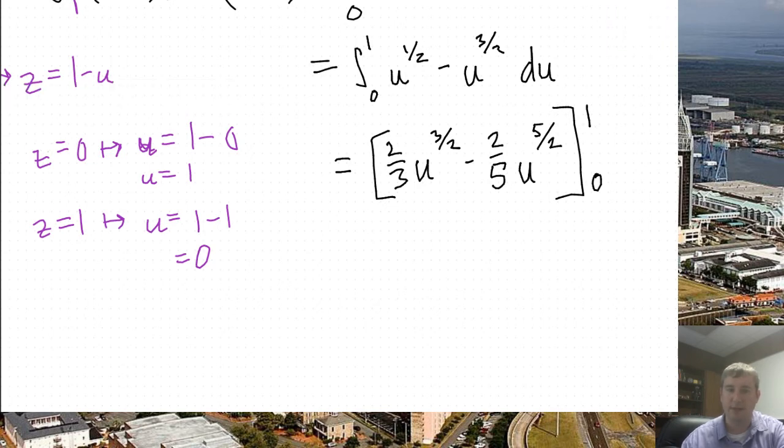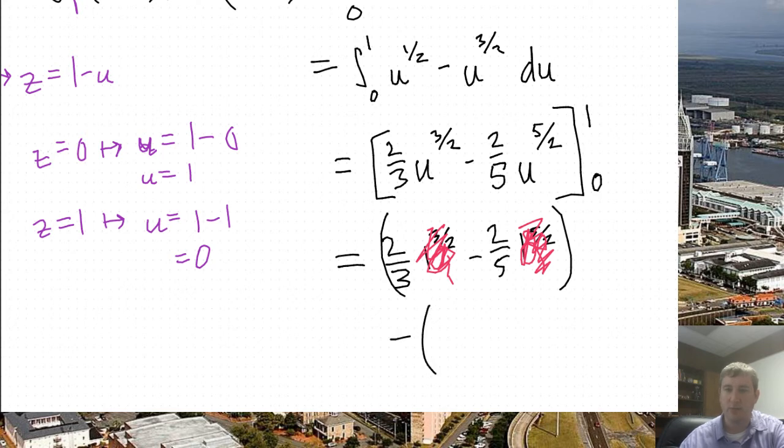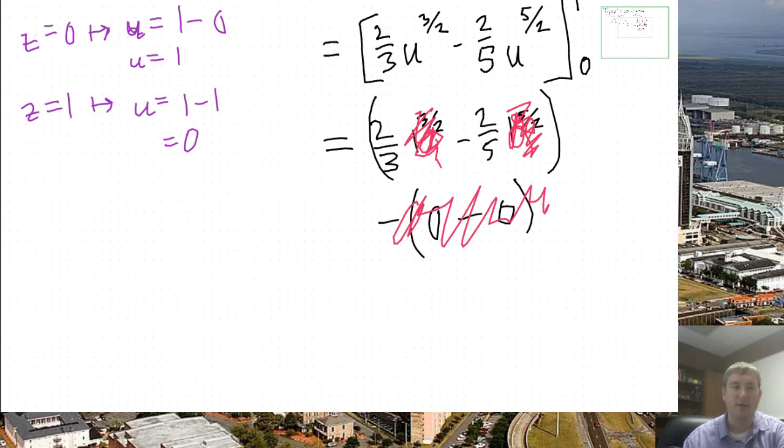All right. So what does that yield us? Well, I'll plug in the top. And thank goodness we've got easy numbers to plug in. 2/3 times 1 to the 3/2, minus 2/5 times 1 to the 5/2. But of course, 1 to the 3/2, 1 to the 5/2, those are just 1, so they go away. That's the top. Minus, plug in the bottom. Well, I've got 0s. 0 minus 0. So all that is also going to go away. So my result is simply 2/3 minus 2/5. And I can get a common denominator. That's going to be over 15. So I'll do 10/15 minus 6/15. The final answer is 4/15.